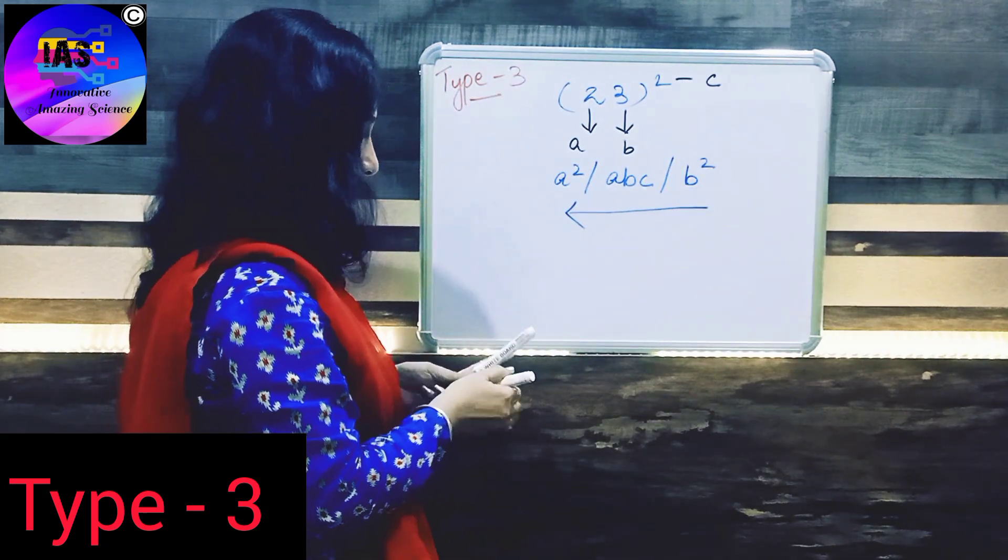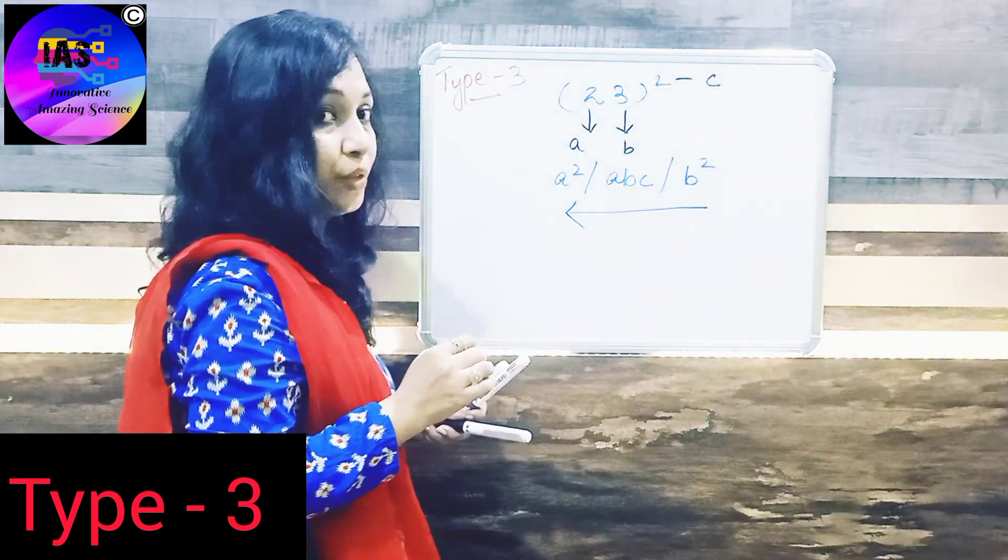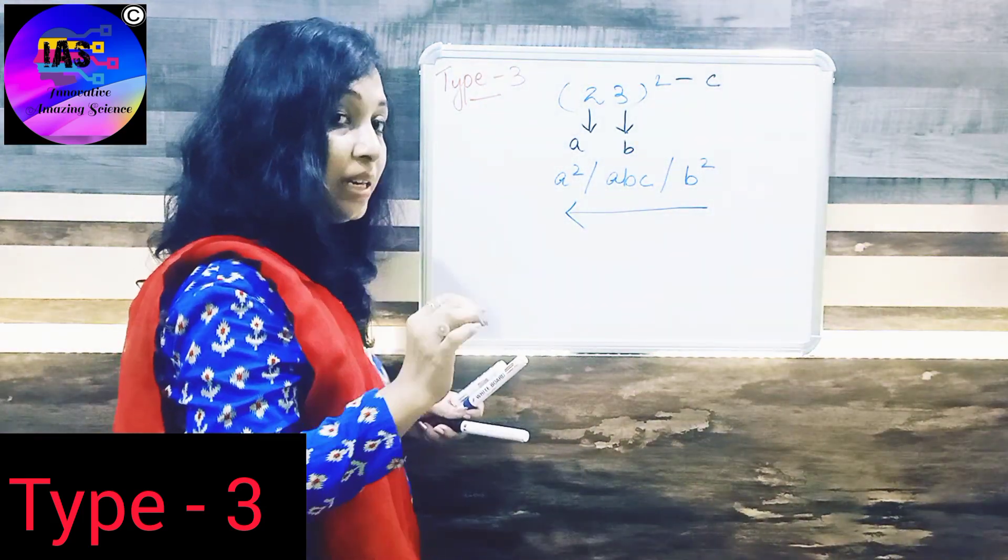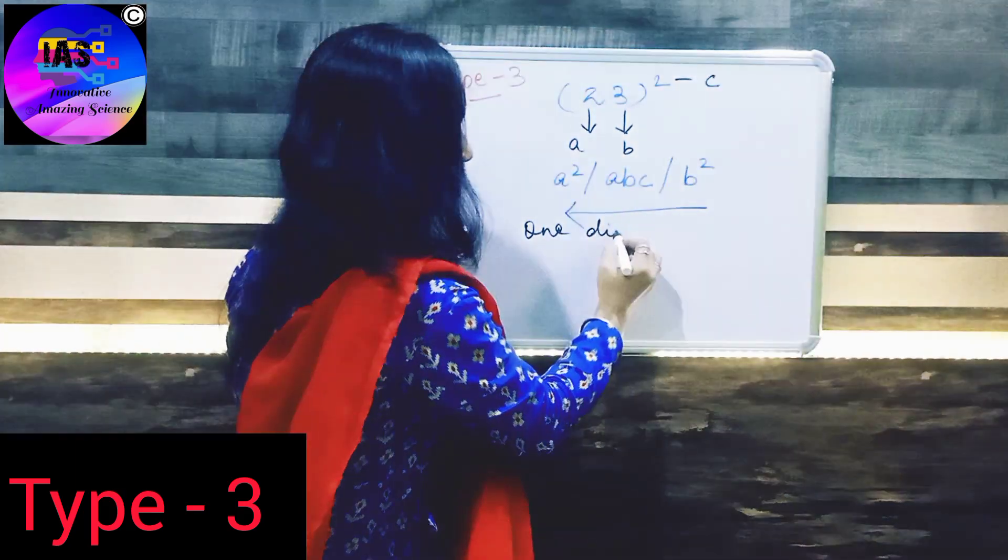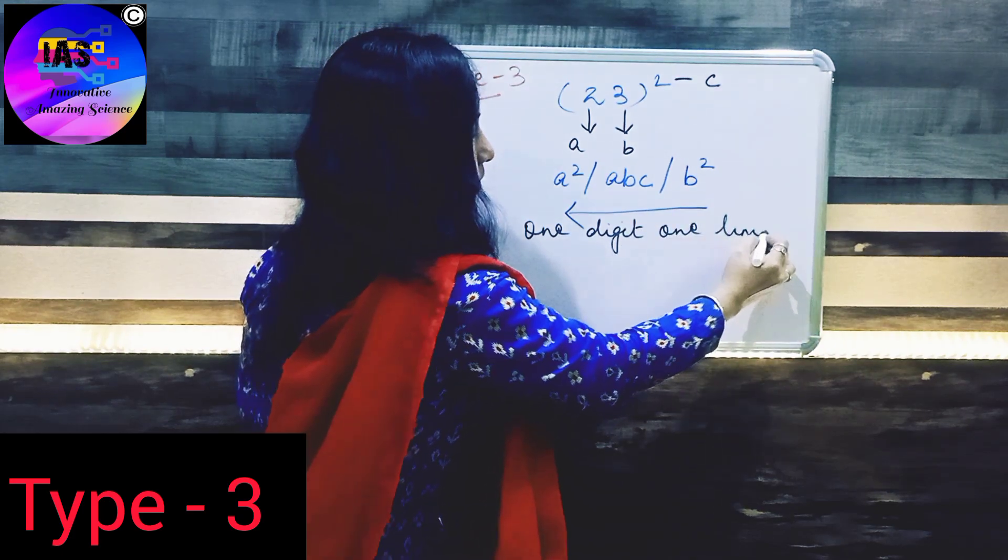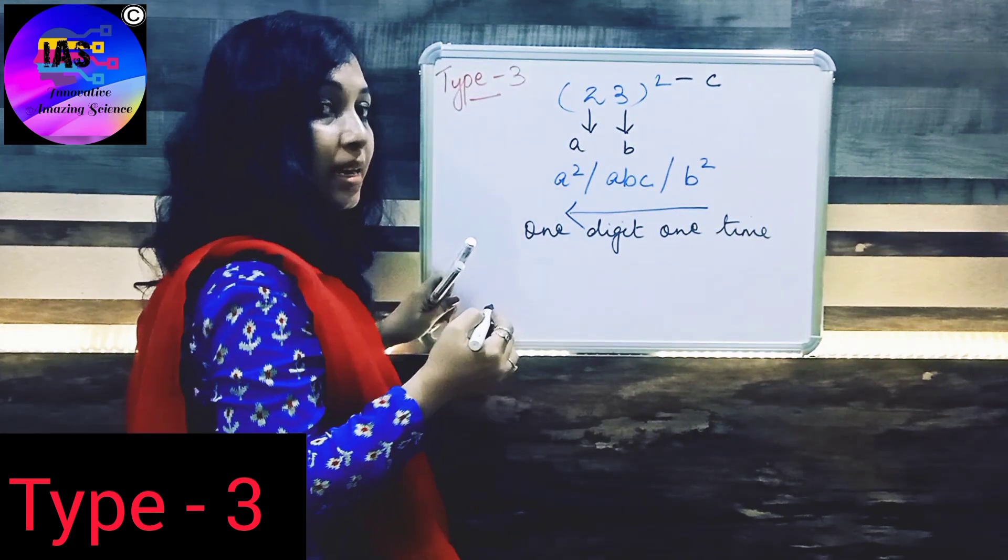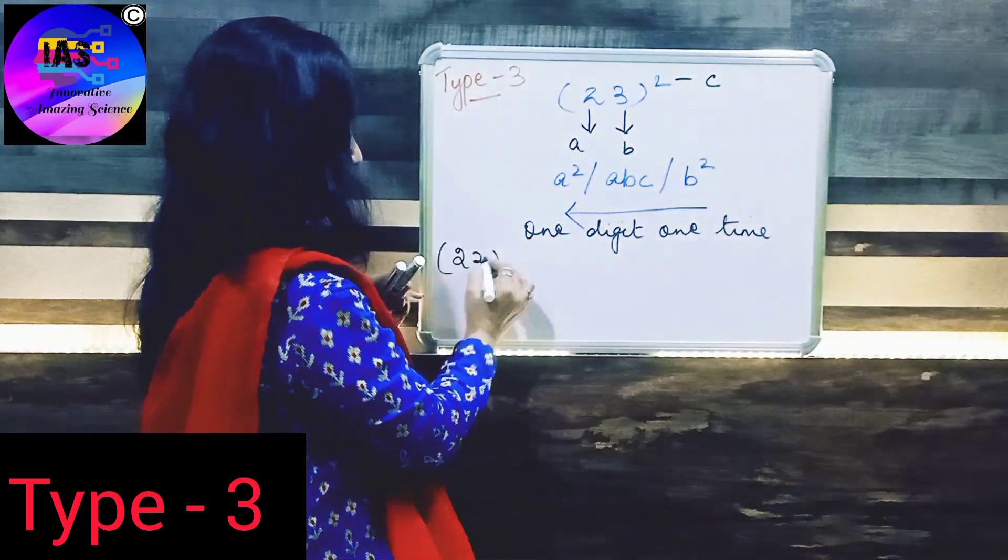So next step is we will try to find out. But the most important thing what you have to remember in this is one digit one time. That means one digit one time. So let's understand how to find out.